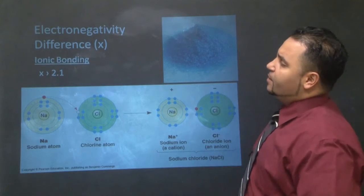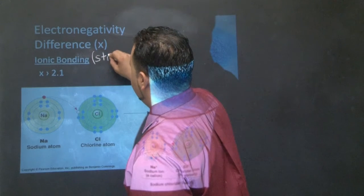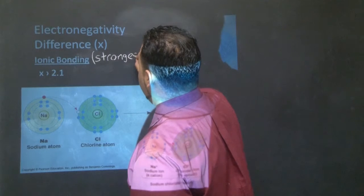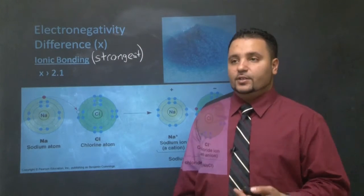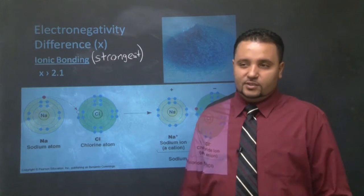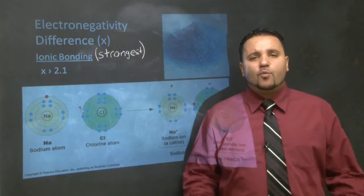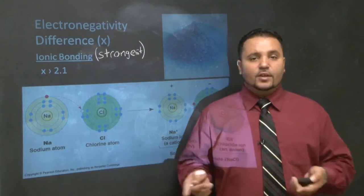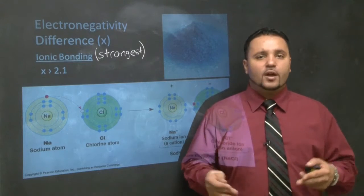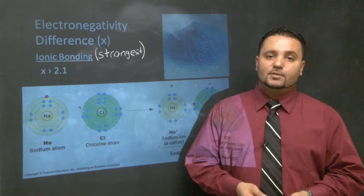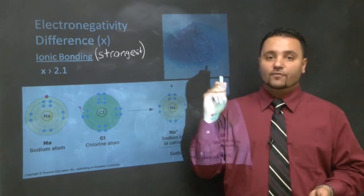So let's take a look. Electronegativity and why I brought it up. So here we have ionic bonding. This is the strongest of all bonds. This is by far the strongest. People tell me, oh, I don't think so. Ionic bonds form salts. Yeah, they do. And they said, well, how come salt dissolves so easily in water? If it's so, what? If it's so strong, why is the sodium and the chlorine come apart so easily?